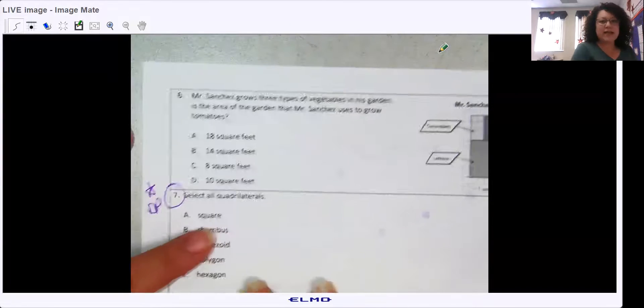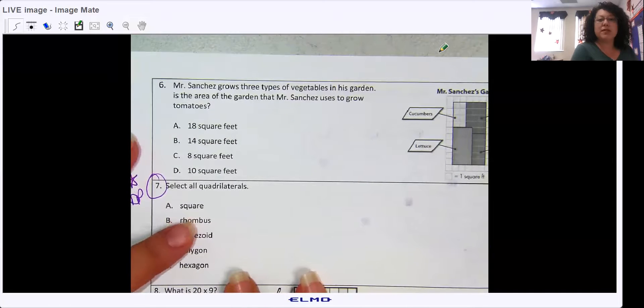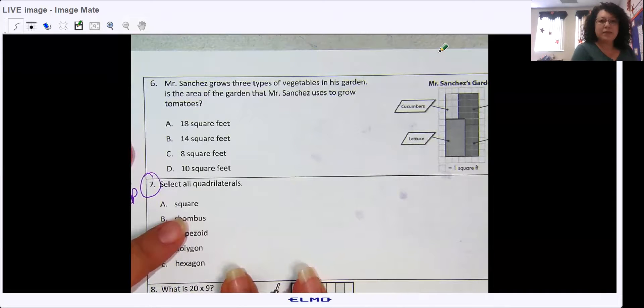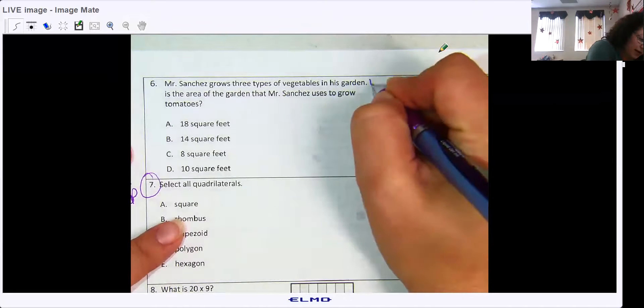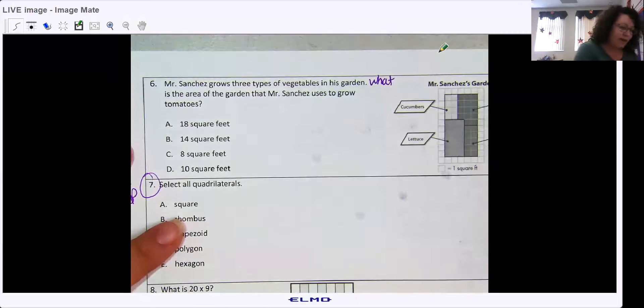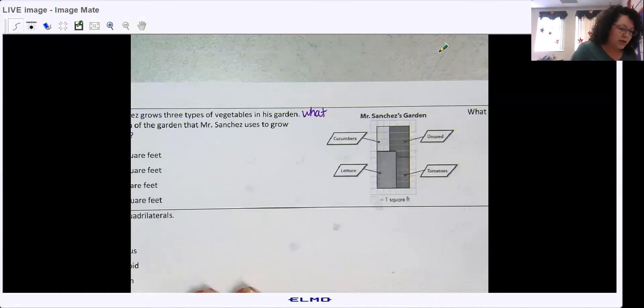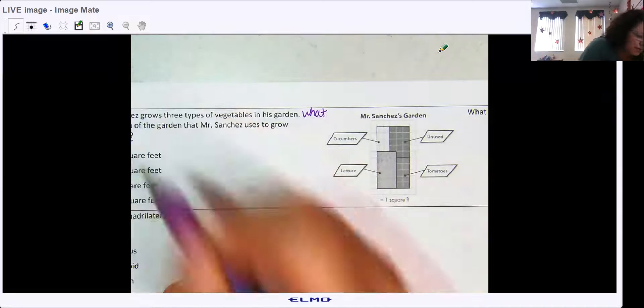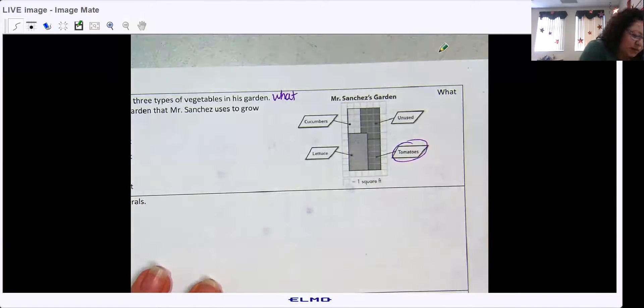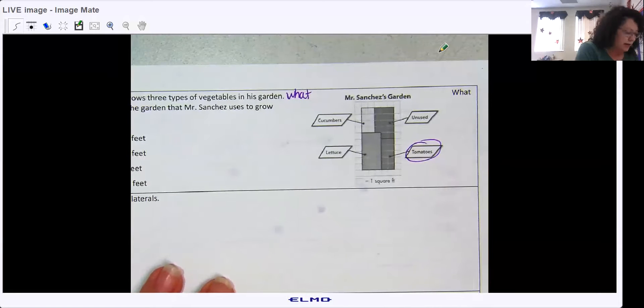Hopefully you were thinking that as I was going through that problem. All right, number six, Mr. Sanchez grows three types of vegetables in his garden. He forgot a word here. What is the area of the garden that Mr. Sanchez uses to grow tomatoes? This problem seems familiar.